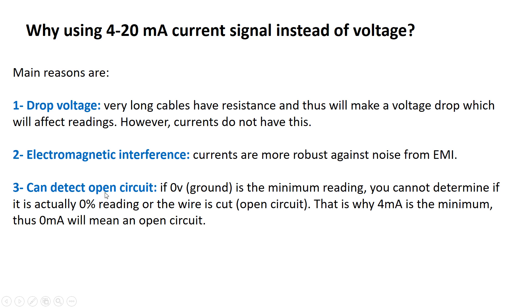Third, can detect open circuit. Now if you consider zero volts or ground to be the minimum reading, you cannot determine if you actually read zero percent from your sensor or actually the wire is cut or open circuit. And this is why 4 milliamps is the minimum, thus zero milliamps will mean an open circuit.